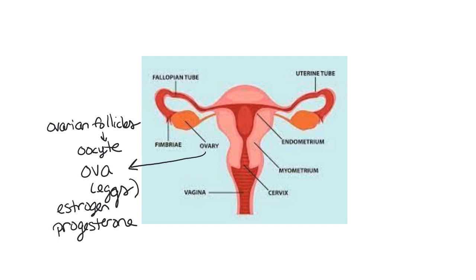The duct system of the female reproductive tract is not connected to the urinary tract like it was for males. For males, the urethra was used for both the release of urine from the body as well as the release of semen. But for females, the vagina and the urethra are two separate openings. So for females, their reproductive tract is not connected to their urinary tract.